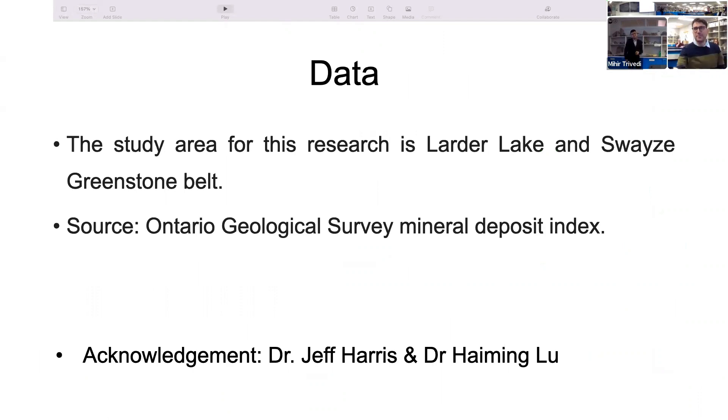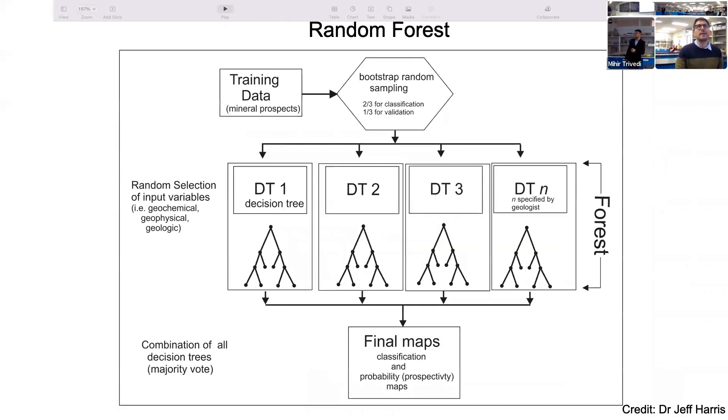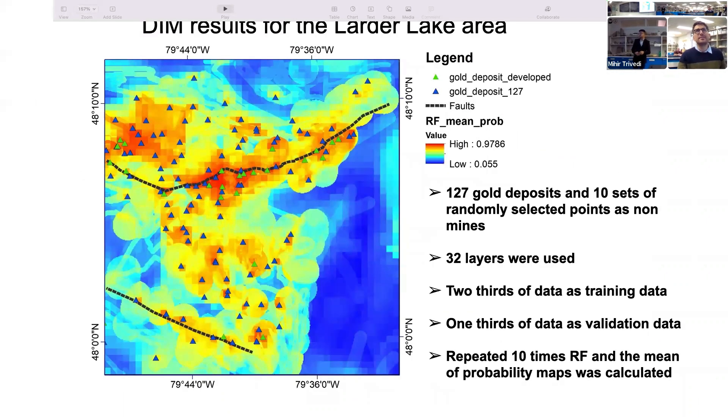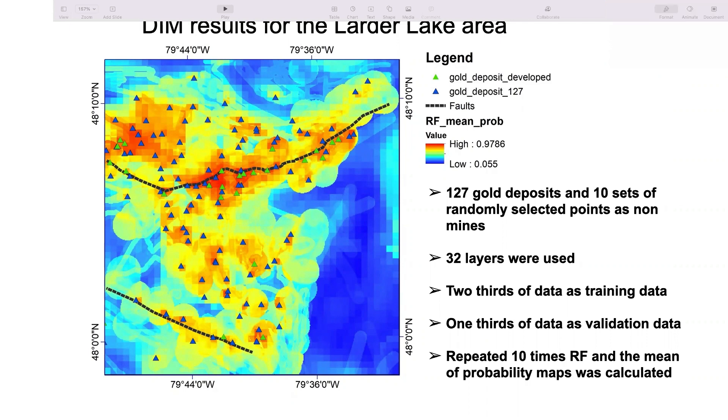Question: Can you go back to your map? I noticed on your prospectivities these long thin linear paths. Is that fitting to one of the particular data types? They look like they're following maybe faults or something. Answer: For that part, I'm not really sure. Jeff speaking: Those are major faults, guys. Those are major faults.